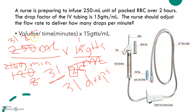We cannot have 0.25 drips, so we have to round off to the whole number. We look to the right of the decimal point — if that number is 5 or greater, we add 1 to make it 32. But it's not, so we just drop the 25 and leave 31. The answer is 31 drops per minute.